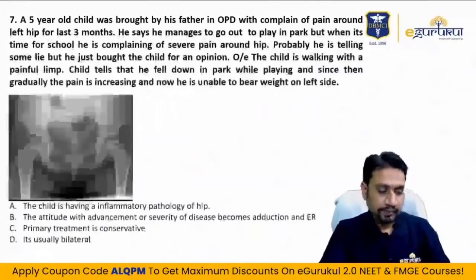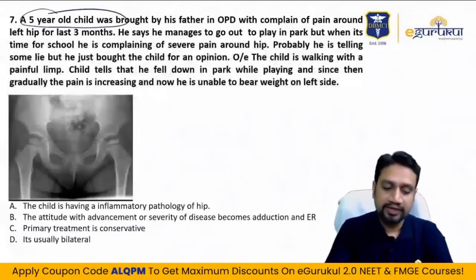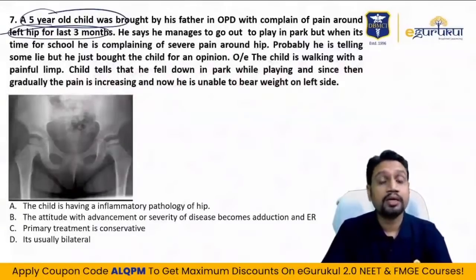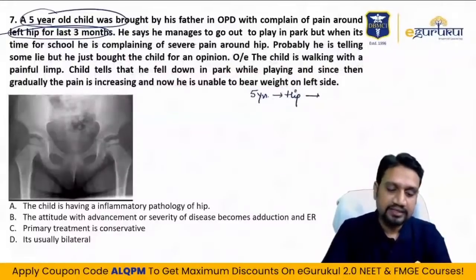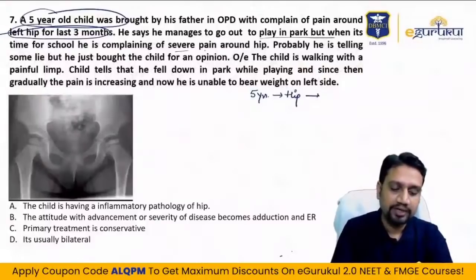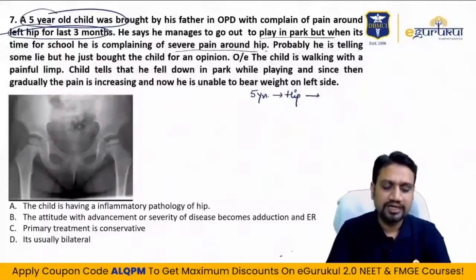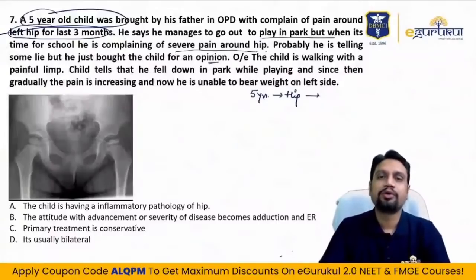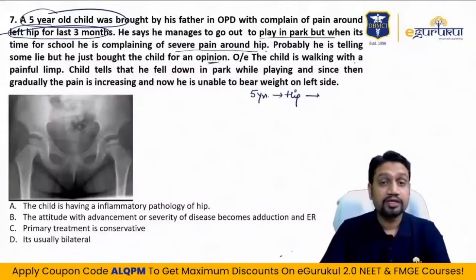Seventh question: a 5-year-old child brought by his father with complaints of pain around the left hip. A child, age 5 years, hip pathology — recall the pediatric hip calendar. The child manages to go to the park but complains of severe pain at school. Father thinks the child is lying. On examination, the child is walking with a painful limb.